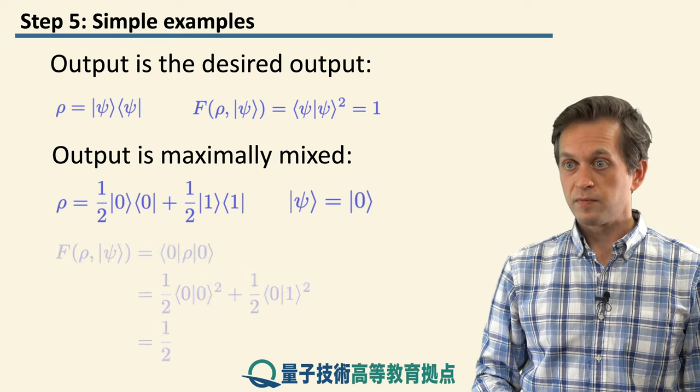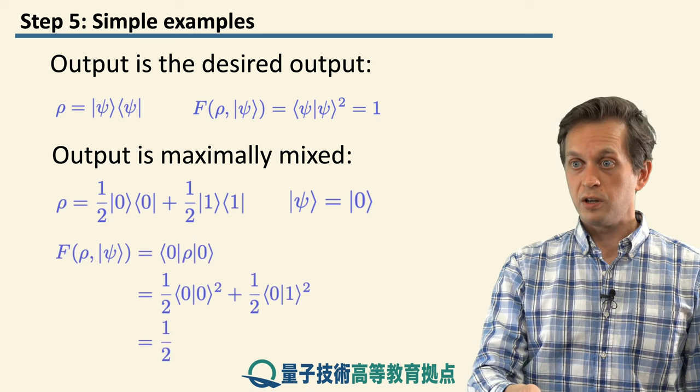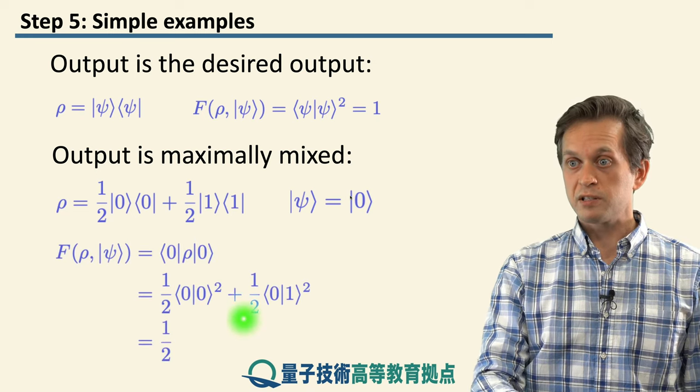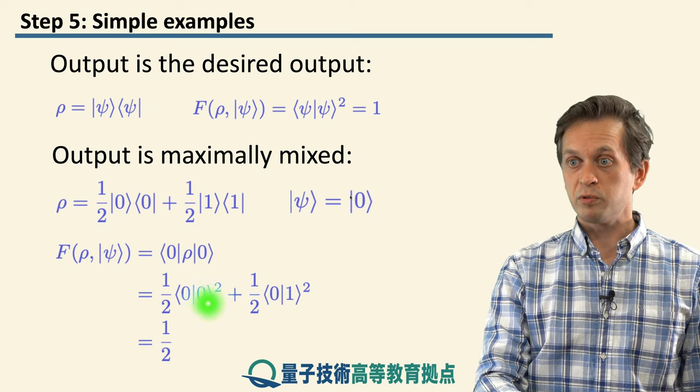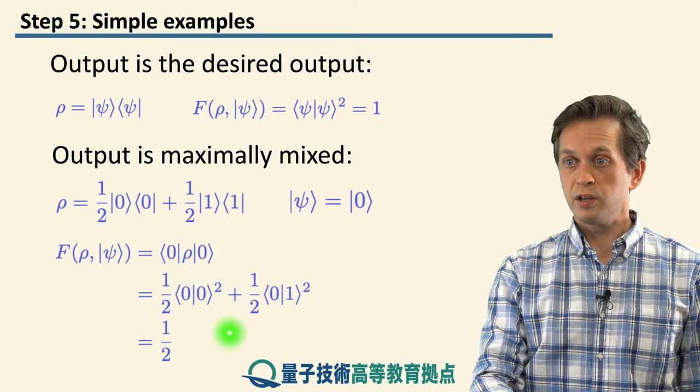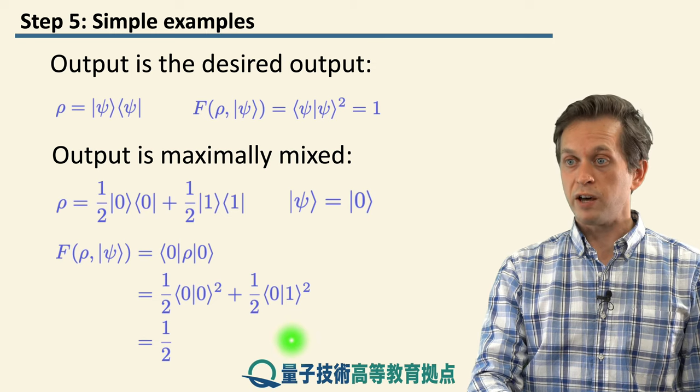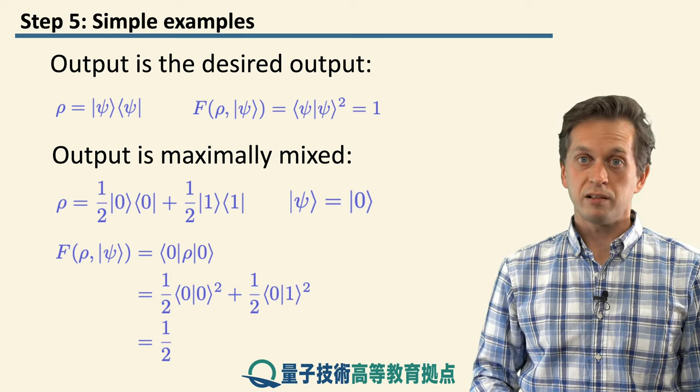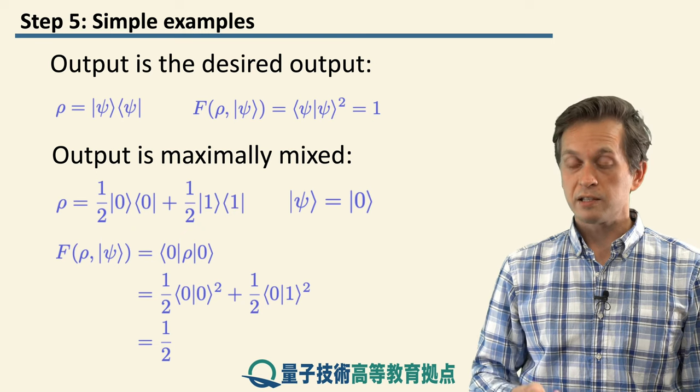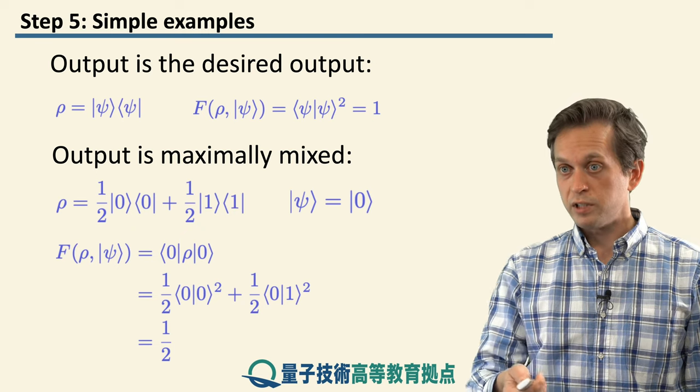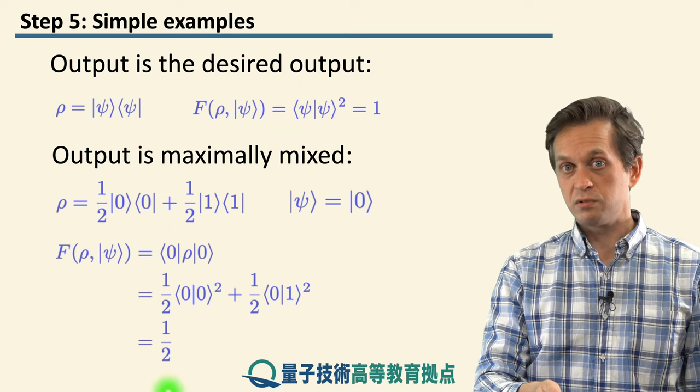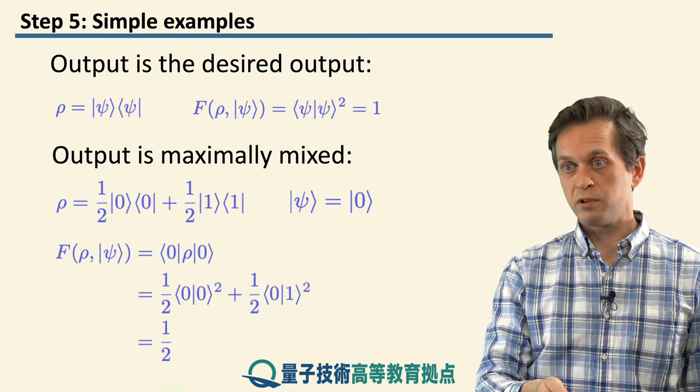What's the fidelity then? Well, we can just compute it, we substitute it in, and it's very simple here. You can see that the inner product between 0 and 0 is just 1, and between 0 and 1, it is 0, it vanishes because 0 is orthogonal to 1. So the final fidelity at the output is 1 half. Notice that it's not 0. It is 0 only for orthogonal states.